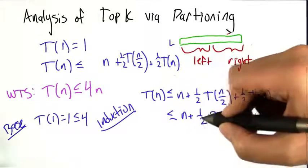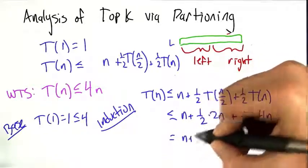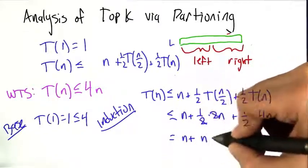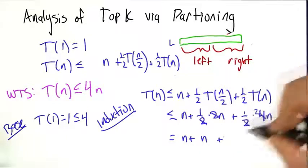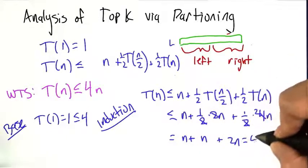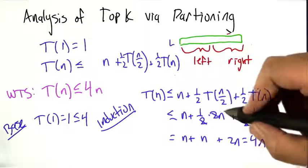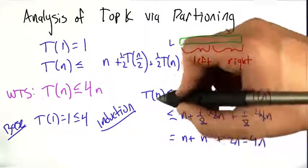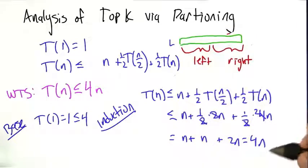What we have is this is equal to n plus n plus 2n, which is indeed 4n. So we've now shown that for each value of n, T(n) is always upper bounded by 4n. And that's what we wanted to show.